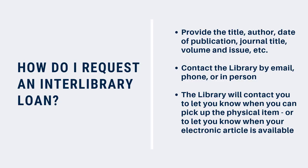So how do you request an item? The first step is knowing what you want. You'll need at least a title and an author, and you'll need to know if the resource is an article or a print book. The more information you have, the better. Information like the name of the author, the date of publication, the name of the journal, even a DOI are all helpful. Gather all of the information you have and email the library at library@loyalistcollege.com, and let us know that you'd like to access that book or article. We'll take care of the rest.